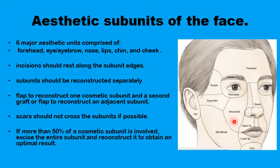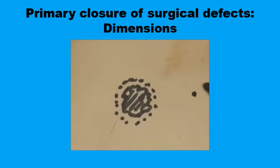If more than 50 percent of a subunit is affected by a lesion or lost in a defect, you would consider whether to replace the whole subunit to achieve a better cosmetic effect rather than reconstructing just a part of it. When closing a surgical defect in an exposed area like the face, the primary aims are minimal tension in the wound, avoiding trap door or dog ear deformities, and achieving a neat scar that lies parallel to relaxed skin tension lines.